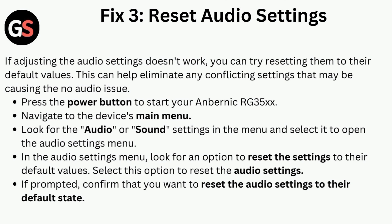Press the power button to start your Anbernic RG35X and navigate to the device main menu. Look for the audio or sound settings in the menu and select it to open the audio settings menu. In the audio settings menu, look for an option to reset the settings to their default values.